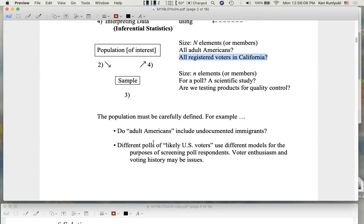Well, instead of registered voters, you might want to ask about likely voters. In a national poll, you might want to ask about likely U.S. voters. And different polls might use different models for the purposes of screening poll respondents. So what constitutes a likely U.S. voter? A Republican poll might have one definition. A Democratic poll might have a different definition. That's why we suspect that some Republican polls might be biased towards Republicans, and some Democratic polls might be biased towards Democrats.